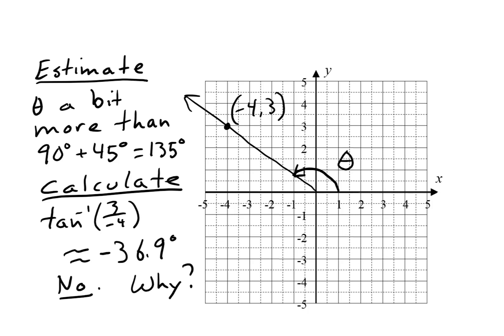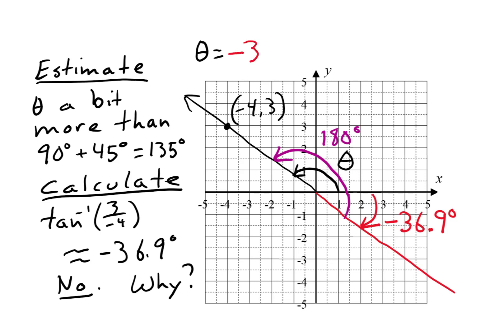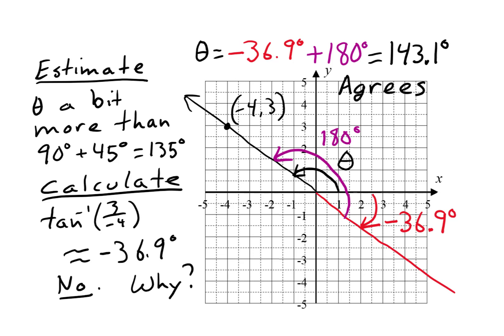Now we go back to the example that didn't come out right. The inverse tangent of 3 over negative 4 gave us negative 36.9 degrees — that's down here in red. If we add 180 degrees to that, shown in purple, then we get the angle theta. It is negative 36.9 degrees plus 180 degrees, so theta is 143.1 degrees, which agrees with our estimate.